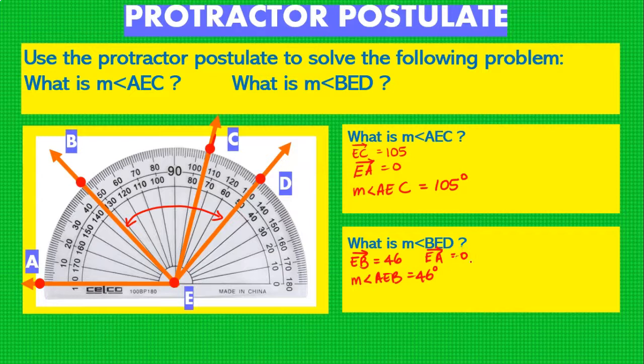Now we also know that ED, we can assign that ray ED, we can assign it with a value of 130 right, and when we subtract the value of EA which is 0, we know that the measurement of angle AED is going to be of an angle of 130 degrees. Correct?